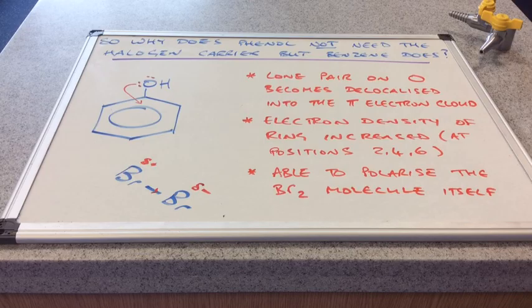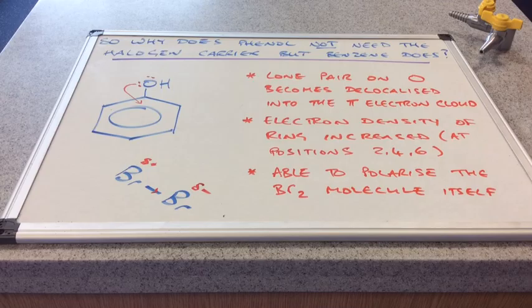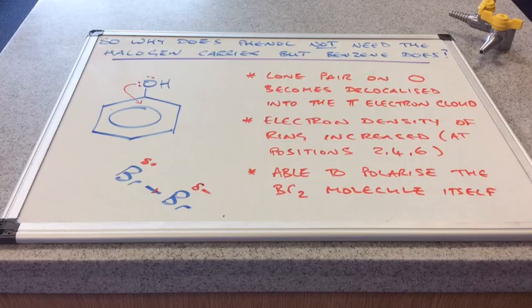And the third key point, the benzene ring now on the phenol is able to polarise the bromine molecule because of this by itself. So it doesn't need the help of the halogen carrier catalyst.